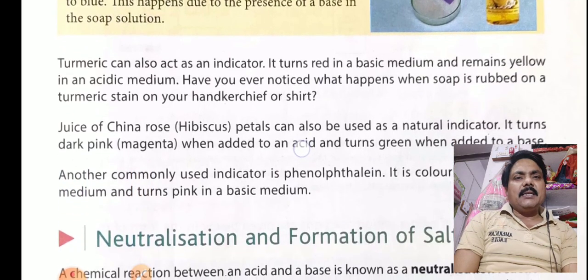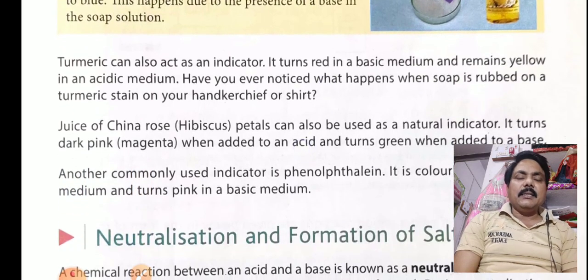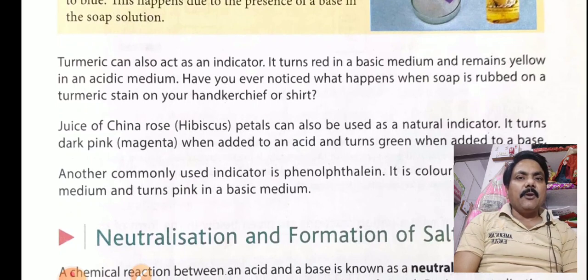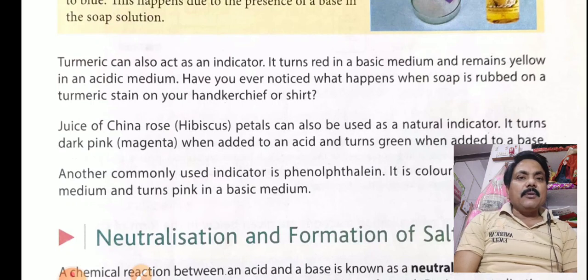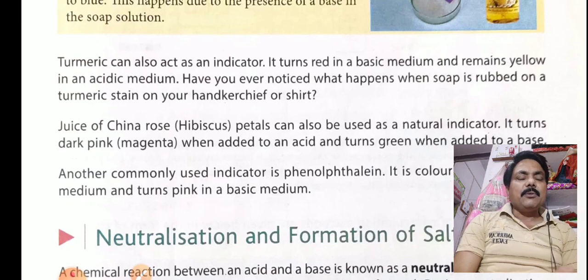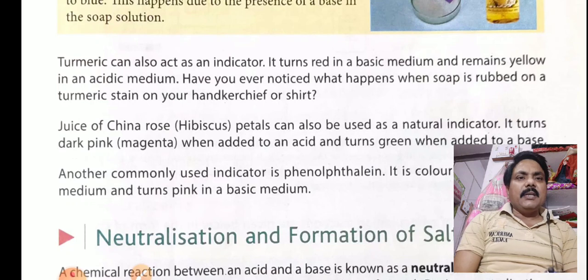Turmeric can also act as an indicator. It turns red in a basic medium and remains yellow in acidic medium. So if we add a base like soap solution to turmeric, it will turn red. In acid, turmeric stays yellow. The color of turmeric in acid is yellow, and in base it turns red.